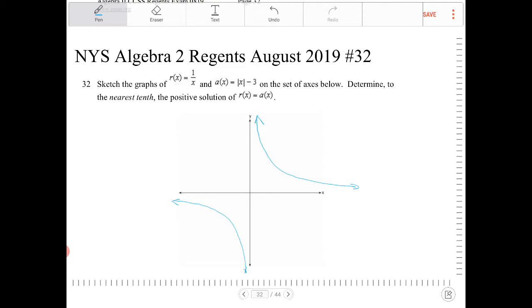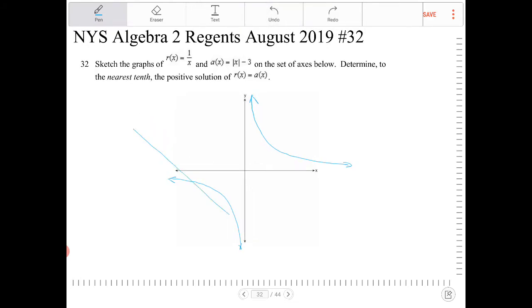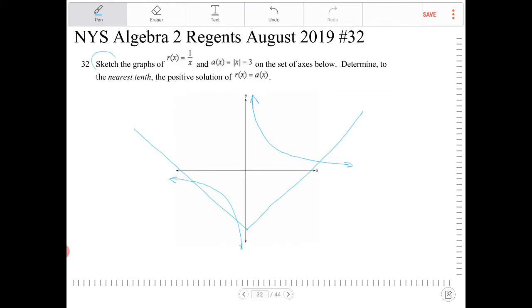And then we have the graph of absolute value of x minus 3. Well, that's just a v-looking shape, so it looks something like this. Again, we're just sketching this because the emphasis here is a sketch. We're not graphing anything accurately.